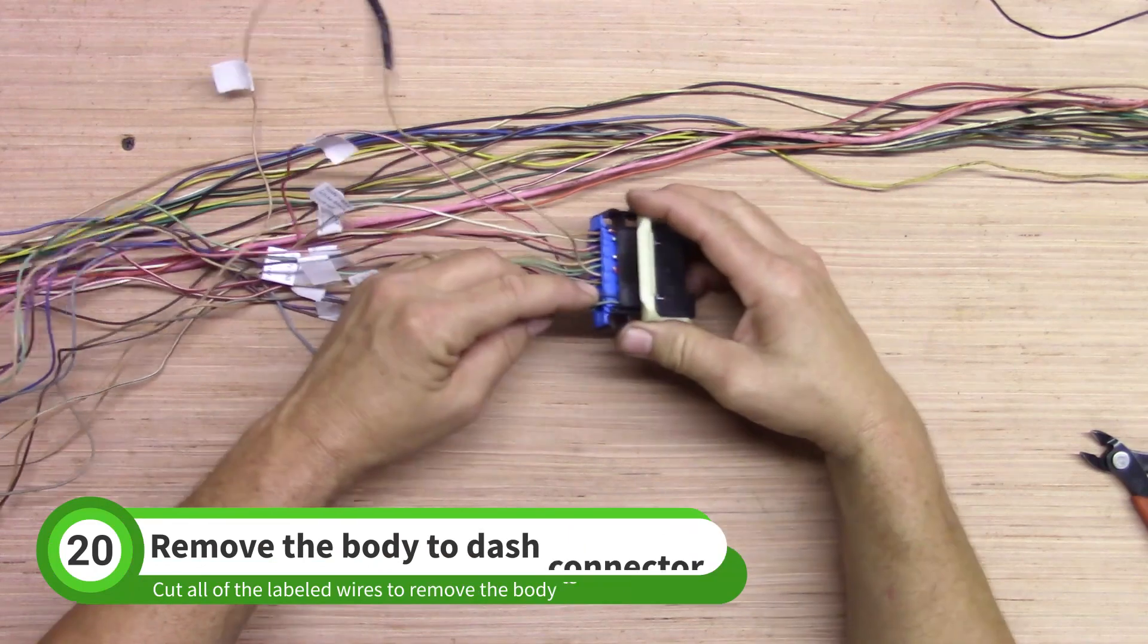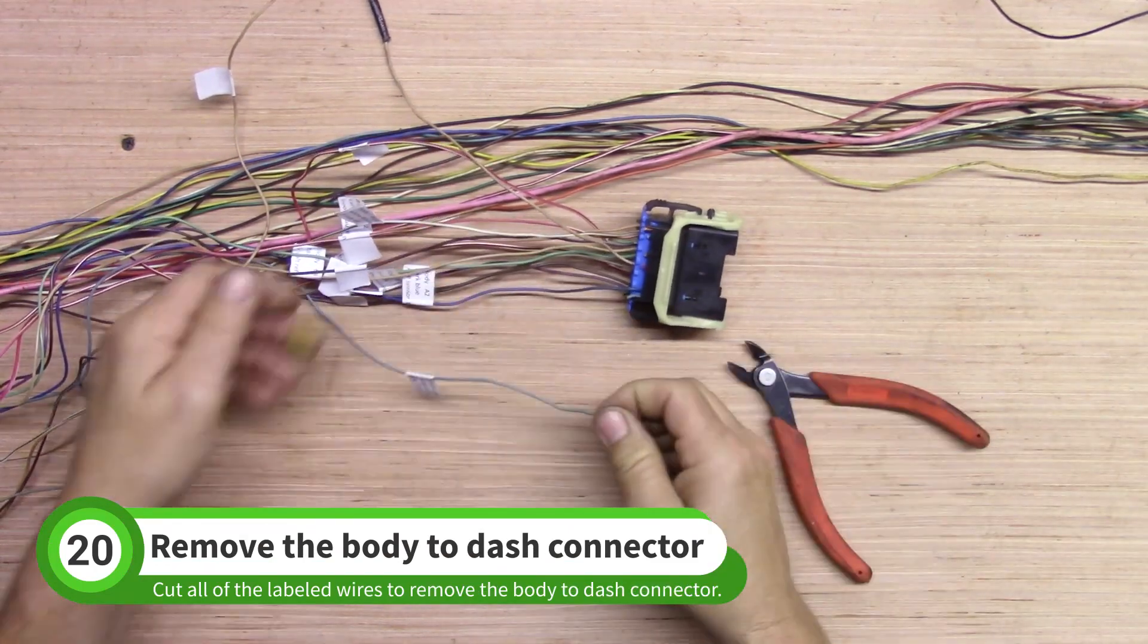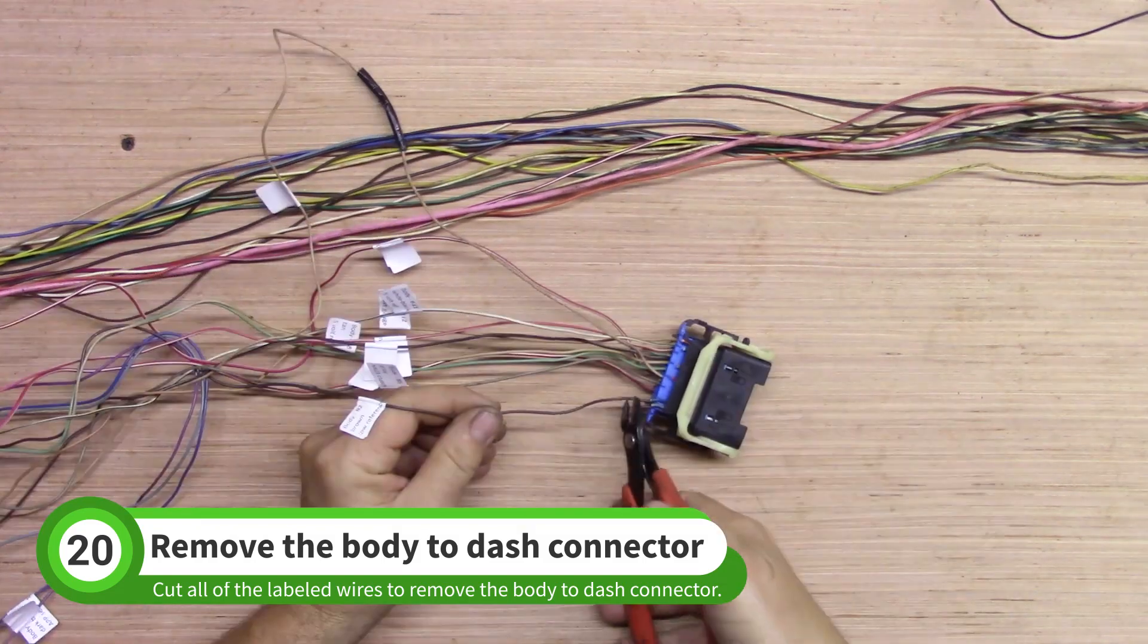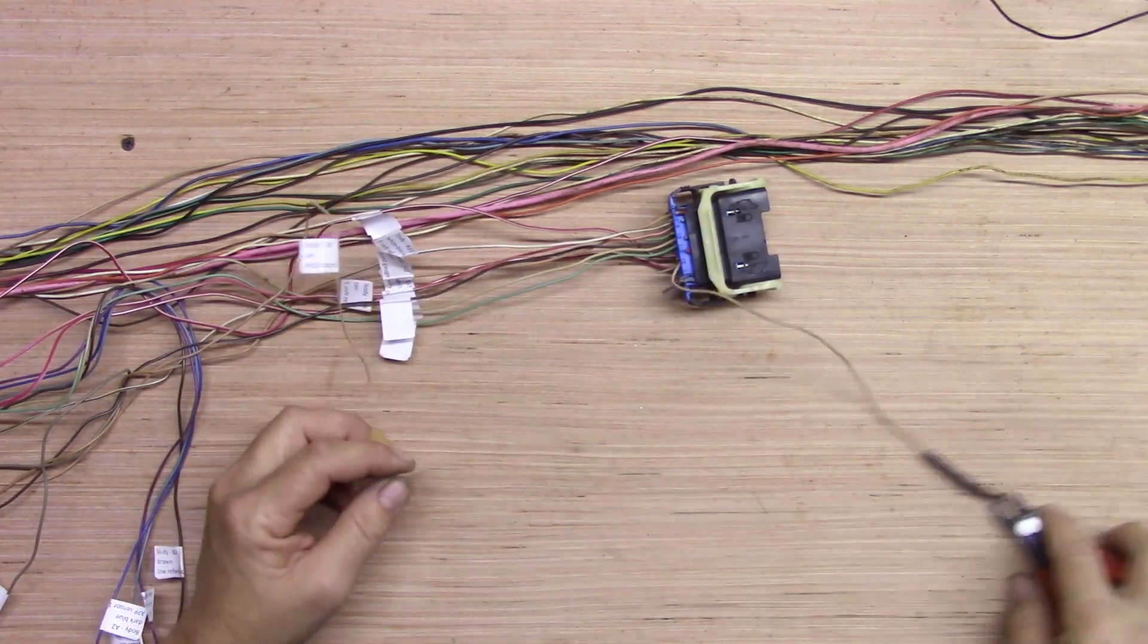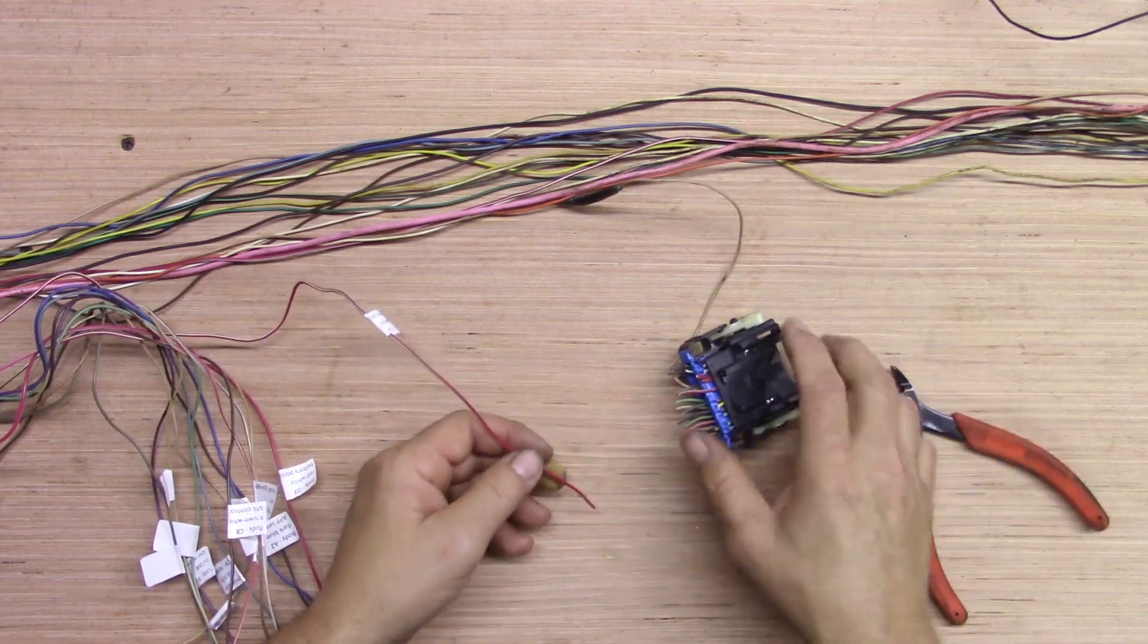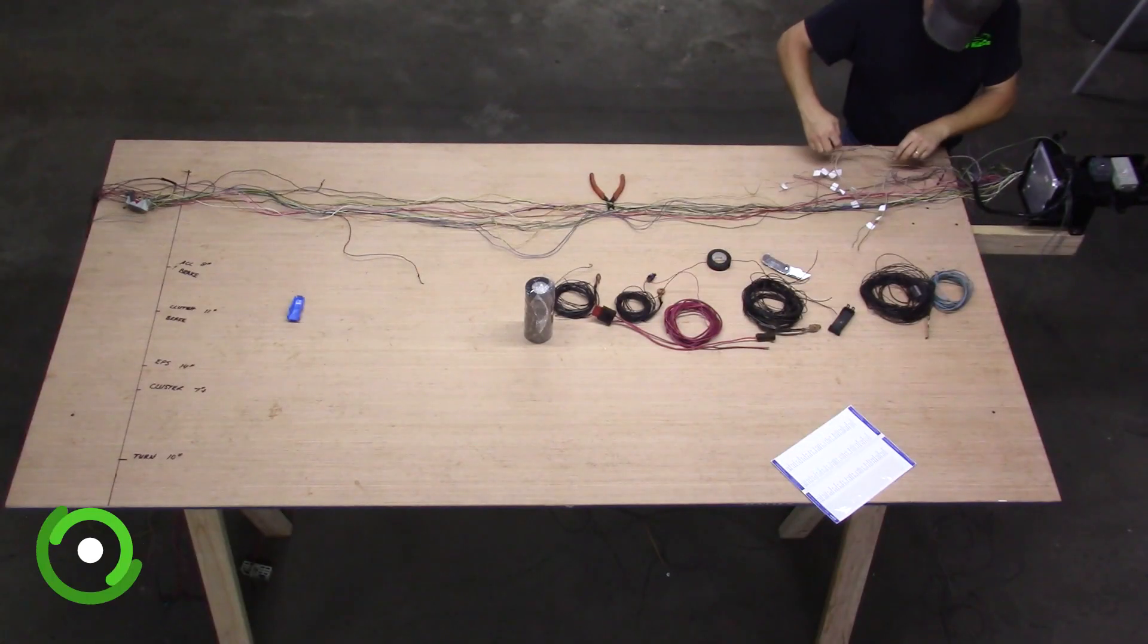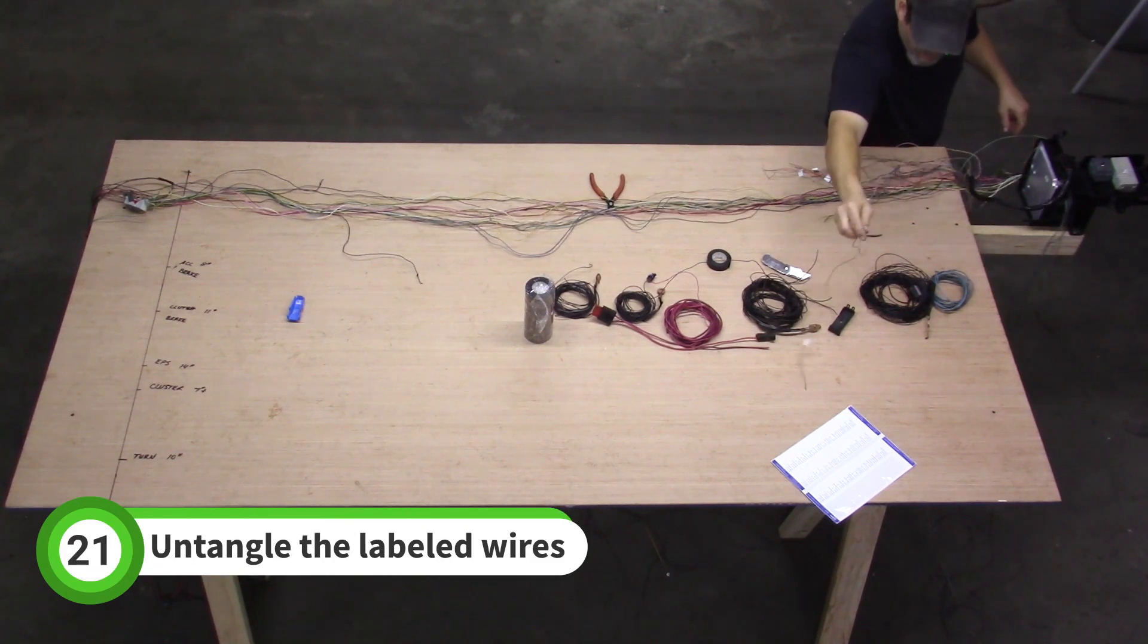Now you can cut the labeled wires to remove the large connector. Do not remove the wires from the harness. Carefully untangle the labeled wires from the harness and set them aside. They will be extended later on.